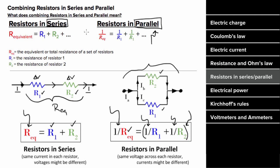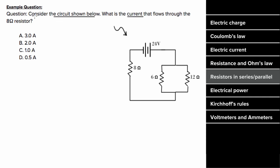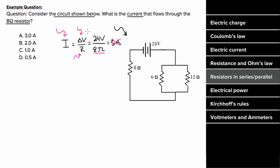For the series/parallel example: what current flows through the eight ohm resistor in a circuit with a 24-volt battery? You might be tempted to use 24V divided by 8Ω to get 3 amps, but that's wrong. Ohm's Law says the current through a resistor equals the voltage across that specific resistor divided by its resistance — and the voltage across the eight ohm resistor is not the full 24 volts. There are voltage drops across the other resistors, so we must first reduce the circuit.